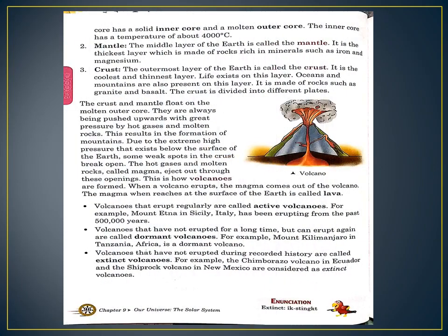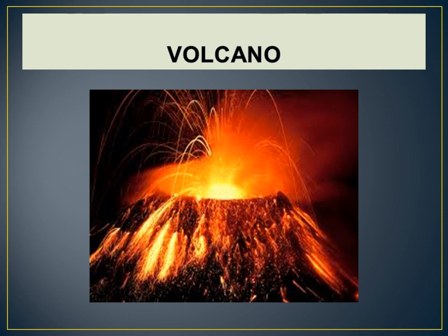The crust and mantle float on the molten outer core. They are always being pushed upwards with great pressure by hot gases and molten rocks. This results in the formation of mountains. Due to the extreme high pressure that exists below the surface of the earth, some weak spots in the crust break open. The hot gases and molten rocks called magma — underline the word magma — eject out through these openings, and this is called a volcano.